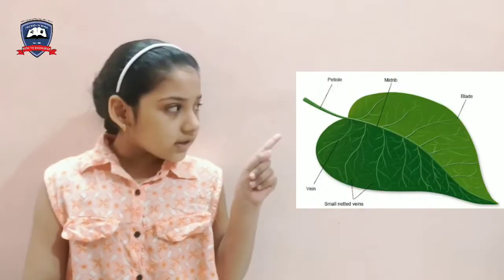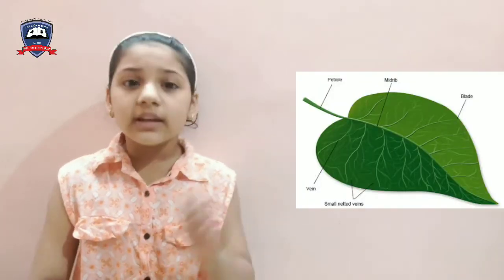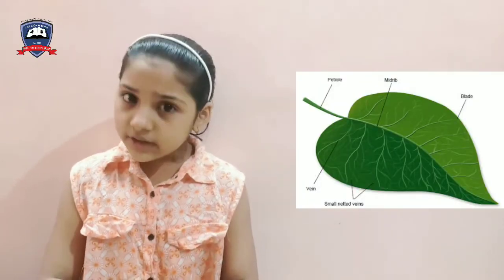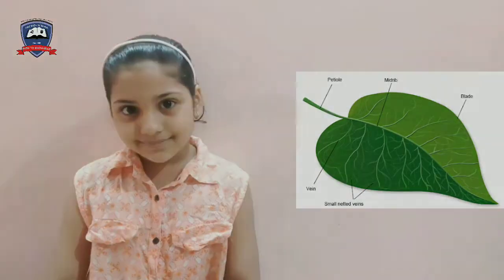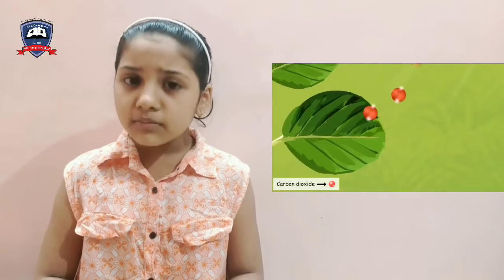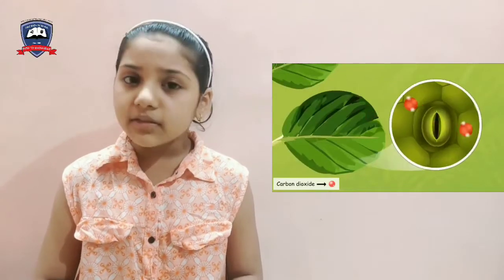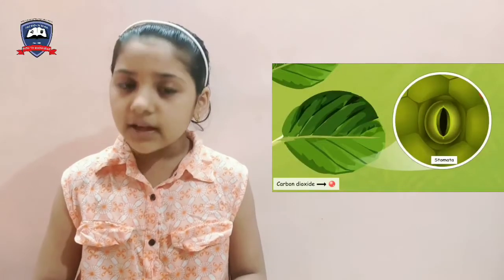Now look at a leaf. Do you see lines all over it? These lines are tubes that take water and carbon dioxide. Leaves have very small openings called stomata.